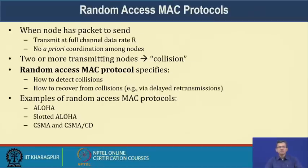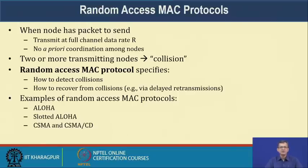In a random access MAC protocol, when a node has a packet to send it transmits at the full channel rate with no prior coordination among nodes. If two or more nodes transmit at the same time, a collision may occur. The protocol must specify how to detect the collision and how to recover — typically via delayed retransmission after some random time.